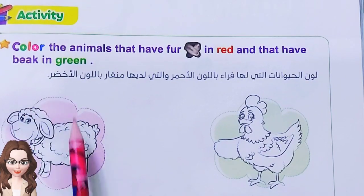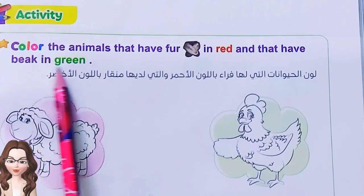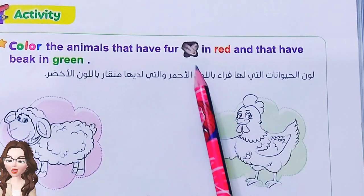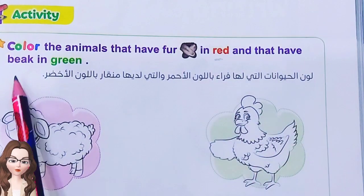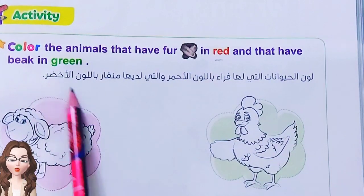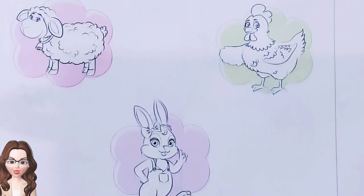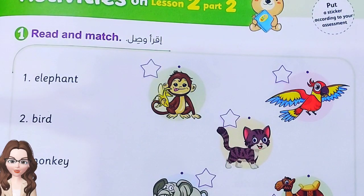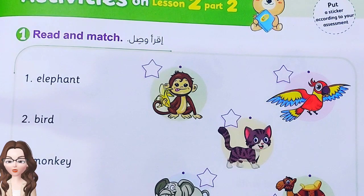This activity is very easy — you can do it by yourself. Color the animals that have fur in red, and those that have a beak in green. You can do it by yourself. Now, activities on Lesson 2 Part 2.